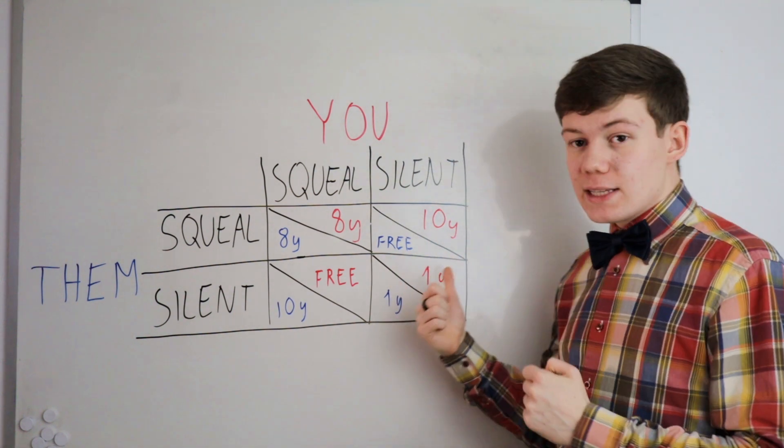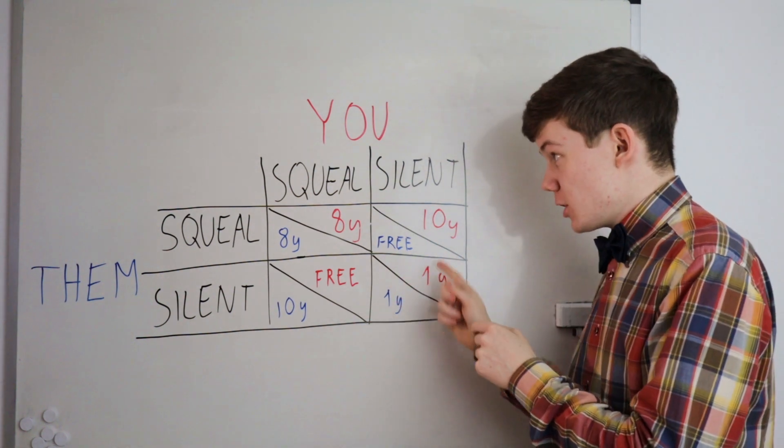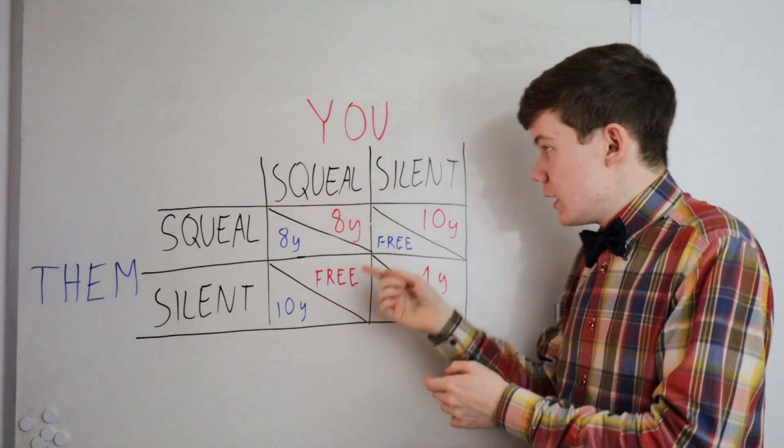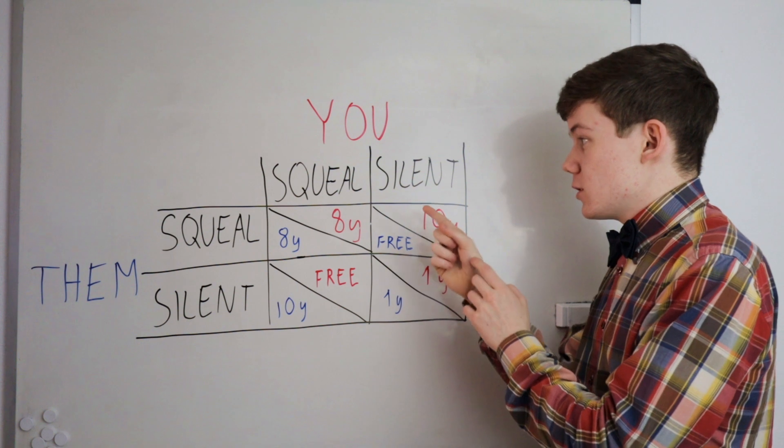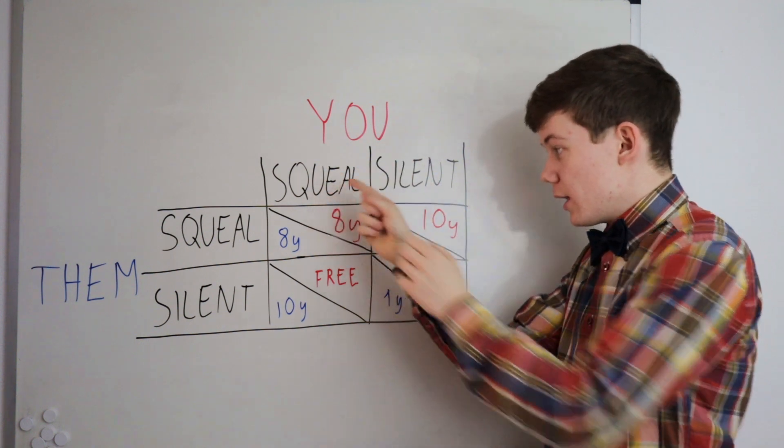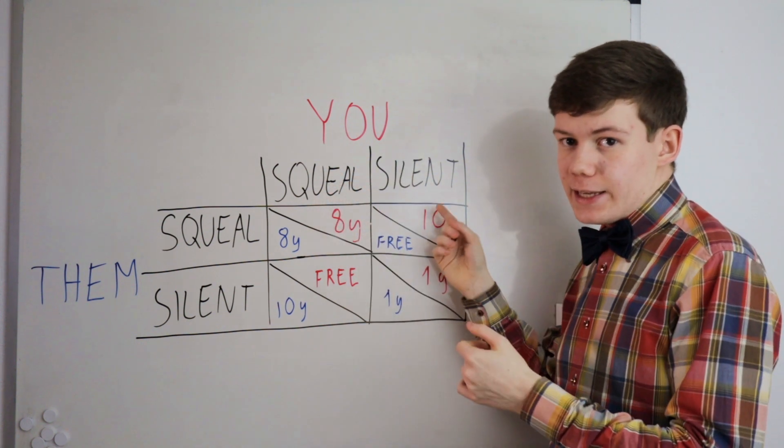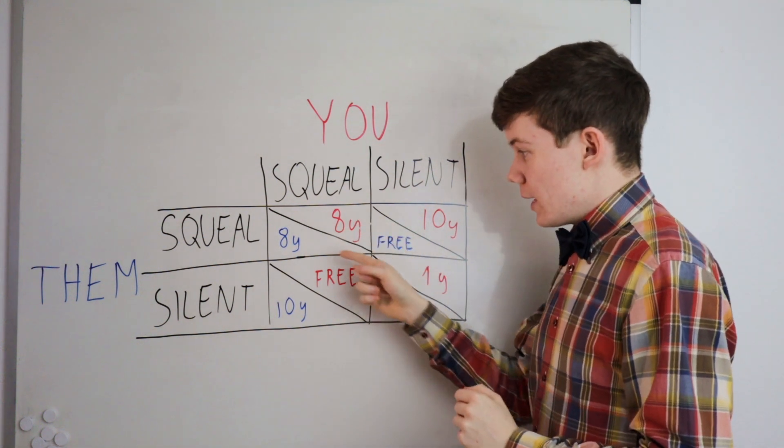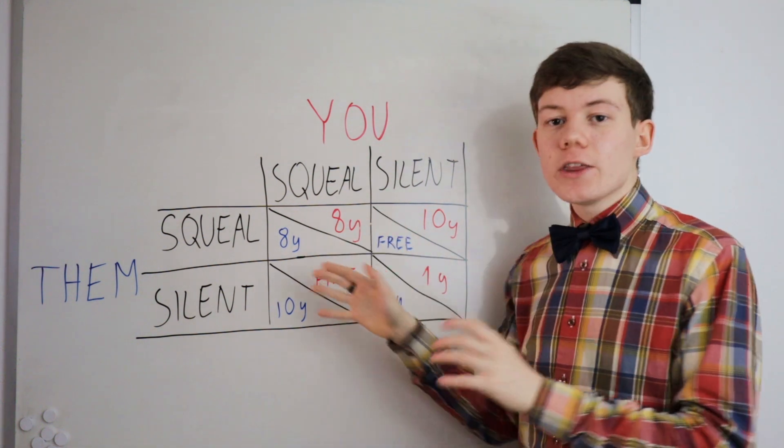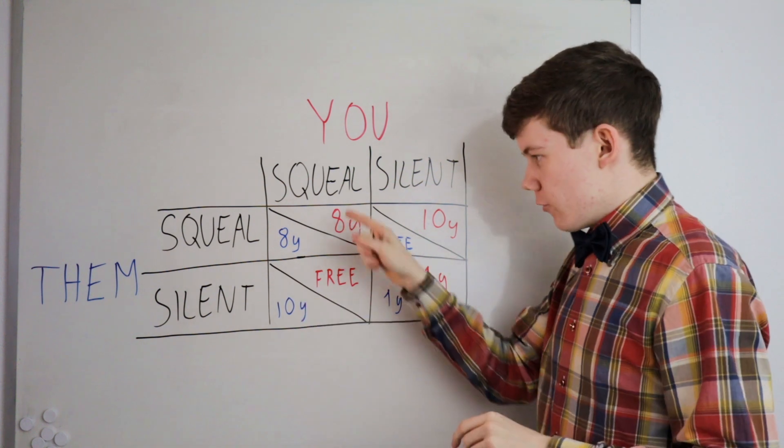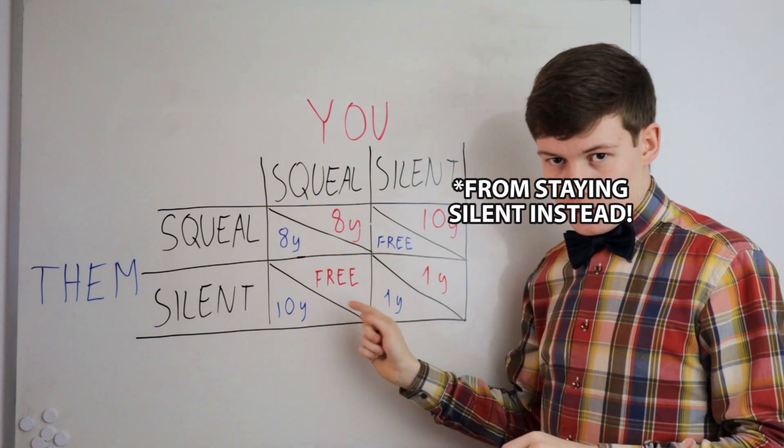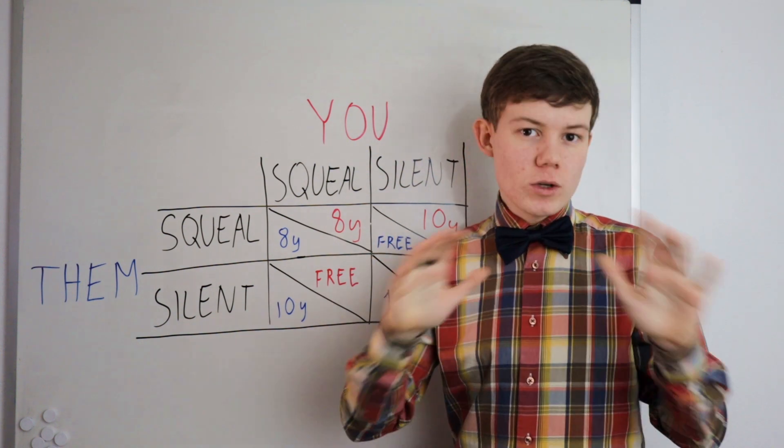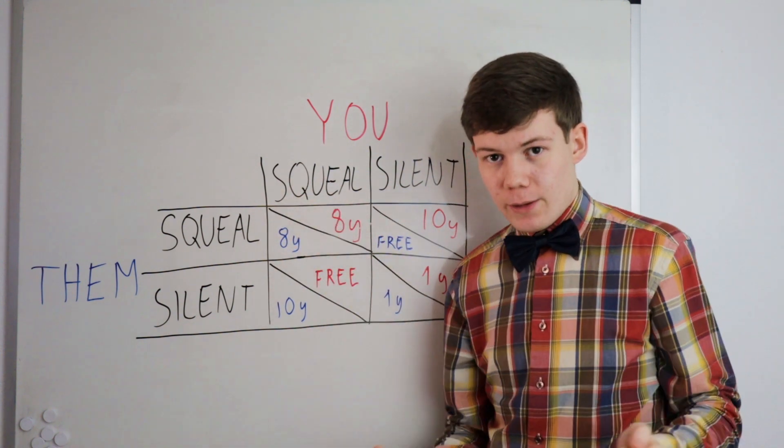And only one of these four outcomes is classified as a Nash equilibrium. If both of you stay silent, you can gain an advantage by changing your strategy to squealing and going free. If you stay silent but they squeal, you can change your strategy from silent to squeal and getting eight years instead of ten years. But if you both squeal on each other and get eight years, neither of you will gain anything from squealing on the other person. You are trapped in getting eight years in prison no matter what you do in this Nash equilibrium.